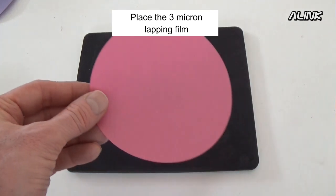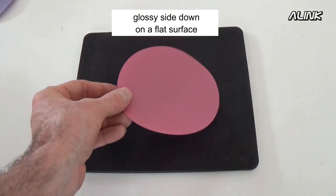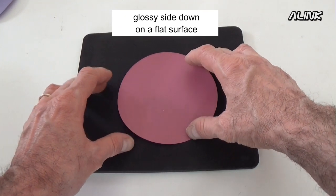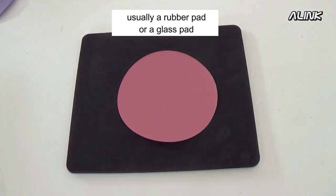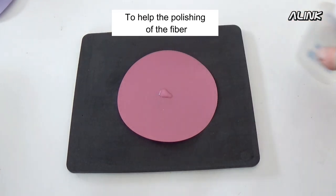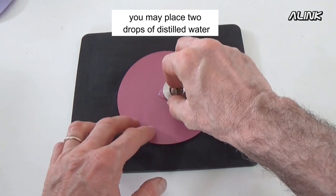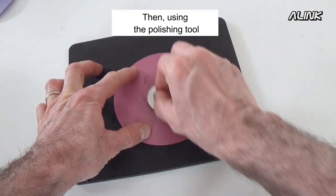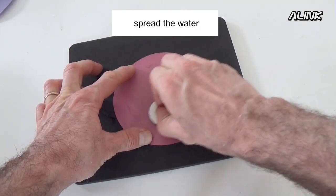Place the 3 micron lapping film, glossy side down, on a flat surface, usually a rubber pad or a glass pad. To help the polishing of the fiber, you may place two drops of distilled water on the pad. Then, using the polishing tool, spread the water.